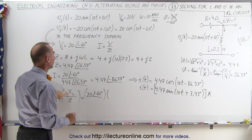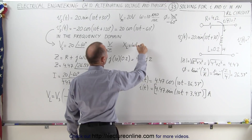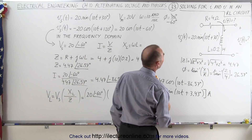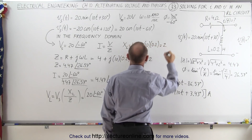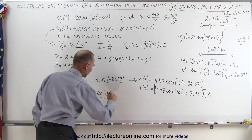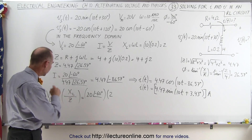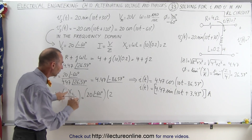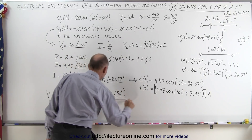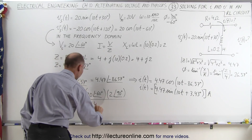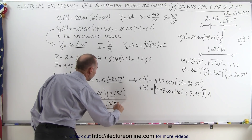We multiply by X sub L. X sub L equals omega times L, which is 10 times 0.2, which equals 2 — that's a magnitude of 2. The phase angle is plus 90 degrees, since the voltage leads the current by 90 degrees for an inductor. Then we divide by the impedance, which is 4.47 at an angle of 26.57 degrees.